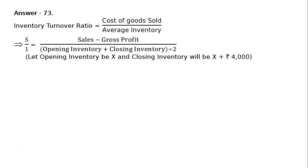It is given that closing inventory is more by rupees 4000 than the opening inventory. So if opening inventory is rupees x, then closing inventory will be x plus rupees 4000. Now we write down the values in their respective places.